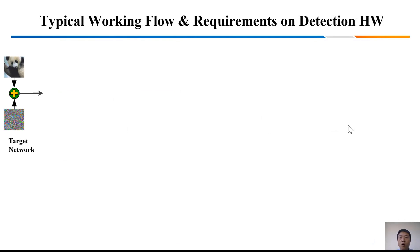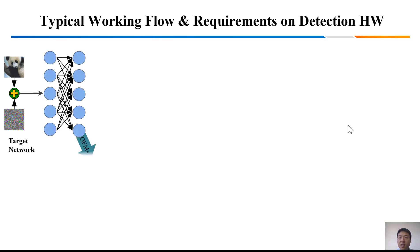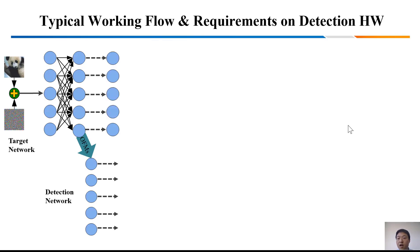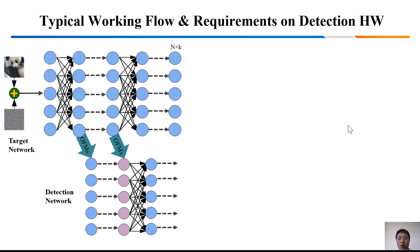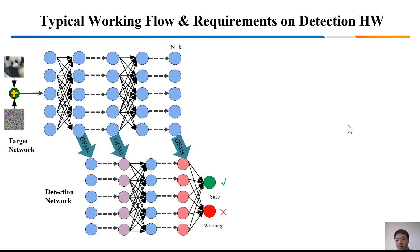Let's see one typical working flow. First, the target network starts to execute. At some point, the detection network is triggered. It loads the intermediate feature maps of the target network as its inputs, and the detect network might perform one or more layers of computation. Then the target network waits until the detection network finishes that layer. Such iterations continue until both networks finish. The detection network should run faster than the target network and will send a safety warning before the target network generates its inference results.